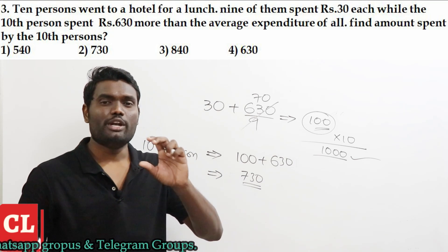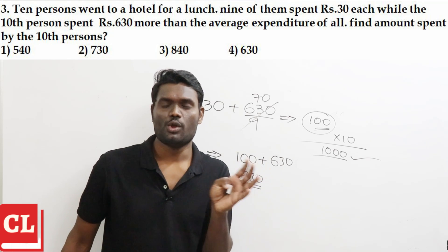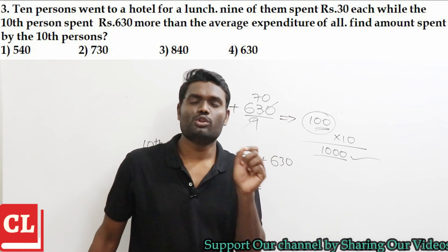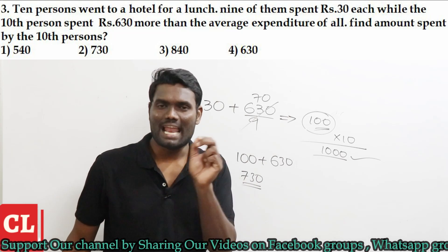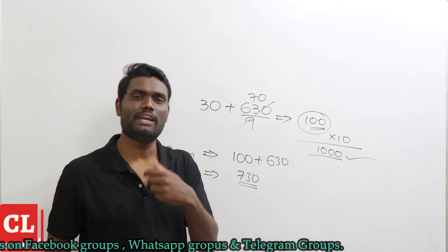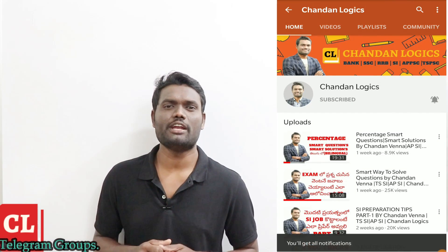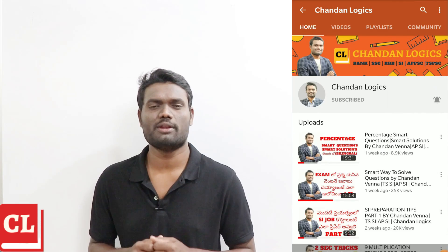This is how you can solve questions related to hotel expenses simply. You need to know how much more the last person spent, then distribute that extra amount among all remaining persons to find the actual average. To find total expenditure, multiply average by number of persons. To find the last person's expenditure, add the extra amount to the average. Hope you enjoyed this session — please subscribe, share the video, and see you in the next session. Bye!